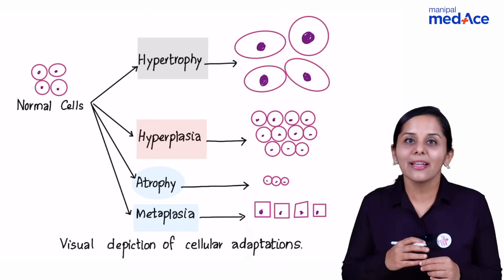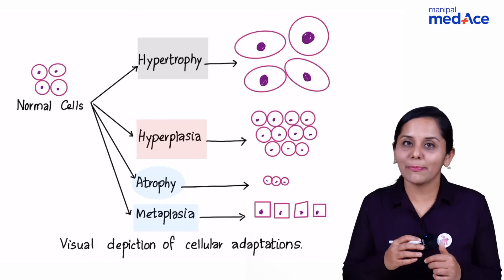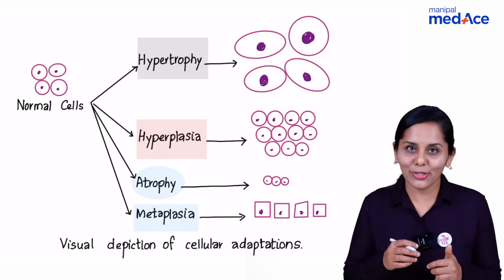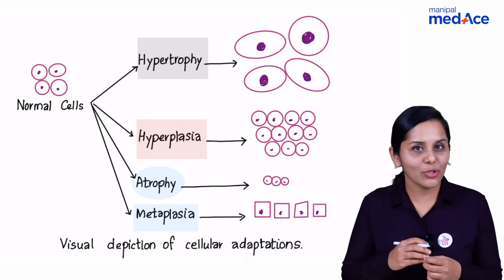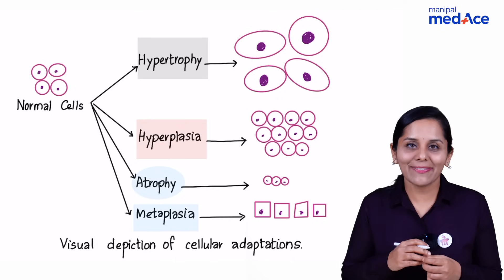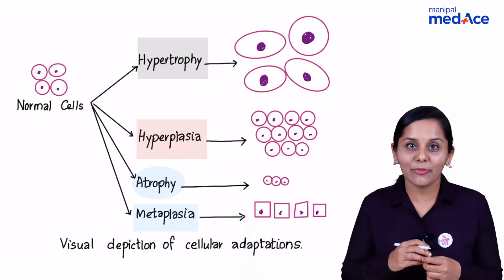The classic example is columnar metaplasia, which you see in Barrett's esophagus due to acid reflux. Or in a smoker's lung, what you see is squamous metaplasia. Metaplasia as well as hyperplasia can be a forerunner of malignancy. Thank you for your attention.